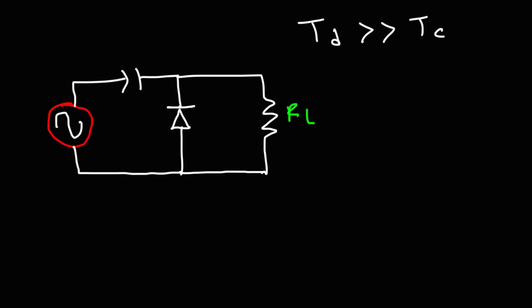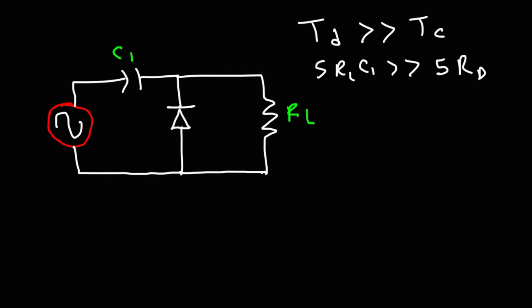Once charged, the capacitor voltage remains relatively constant, and the AC signal rides above and below it. The total discharge time is five time constants, where one time constant is RC — the capacitor discharges through RL, so discharge time is 5·RL·C1. The charge time is also five time constants but through the diode resistance, which is typically very small. Dividing both sides, the key condition is that the load resistance must be significantly larger than the diode's resistance.